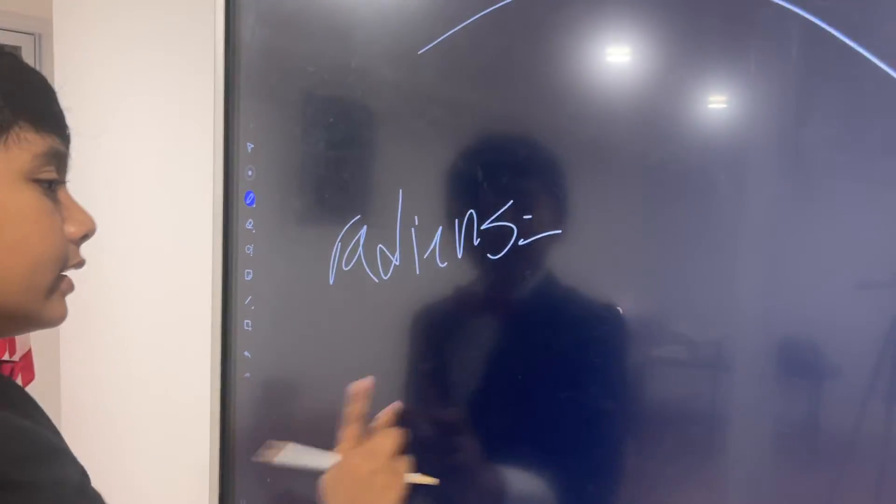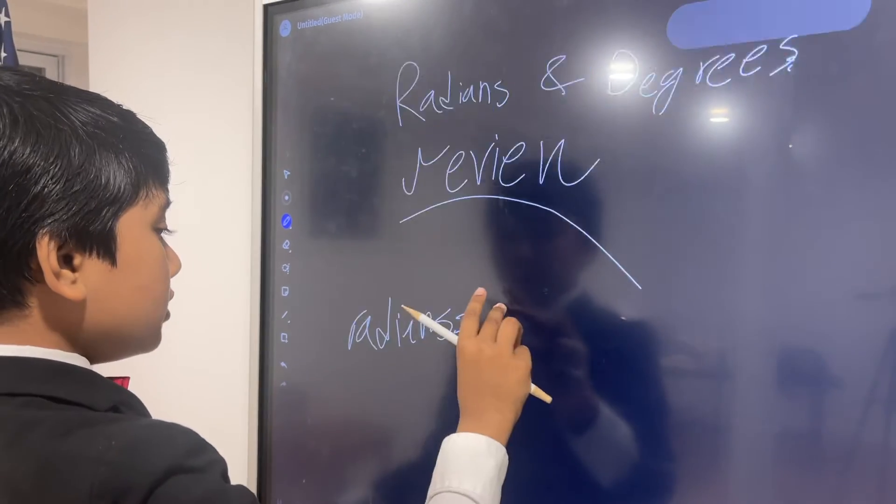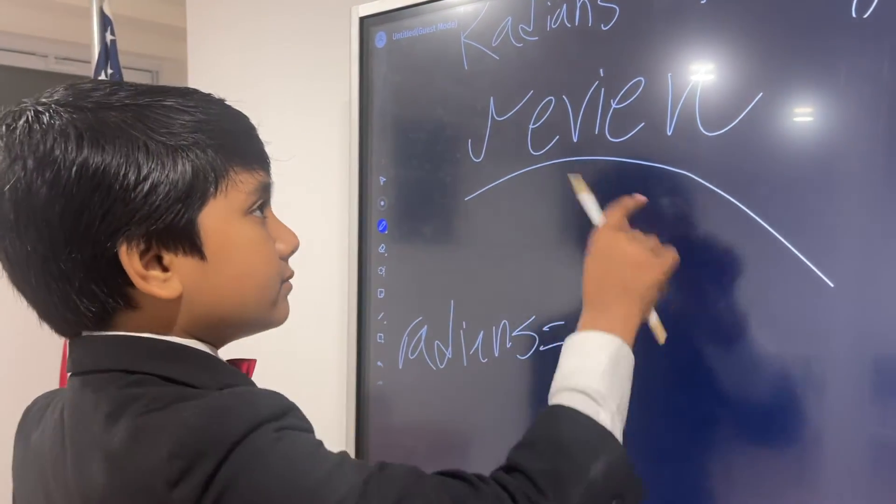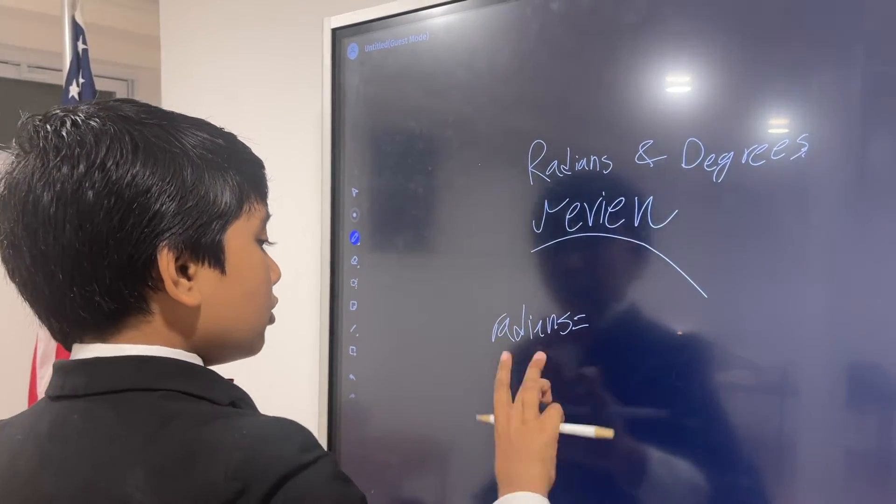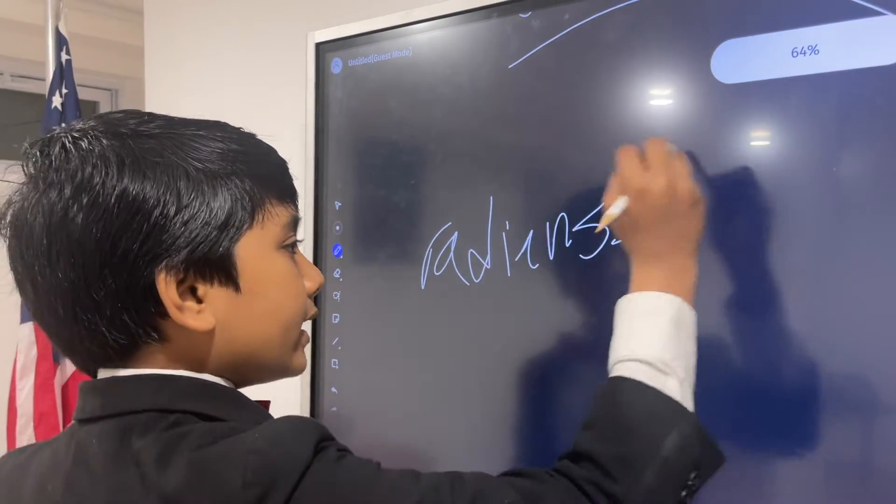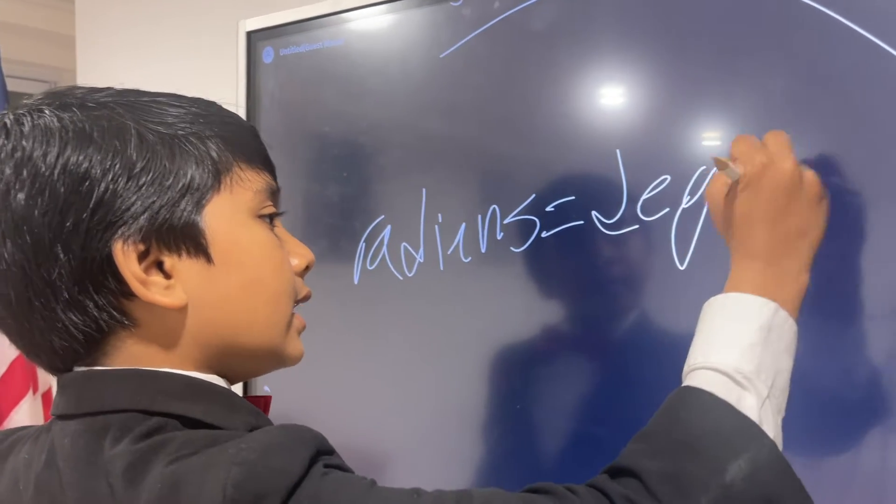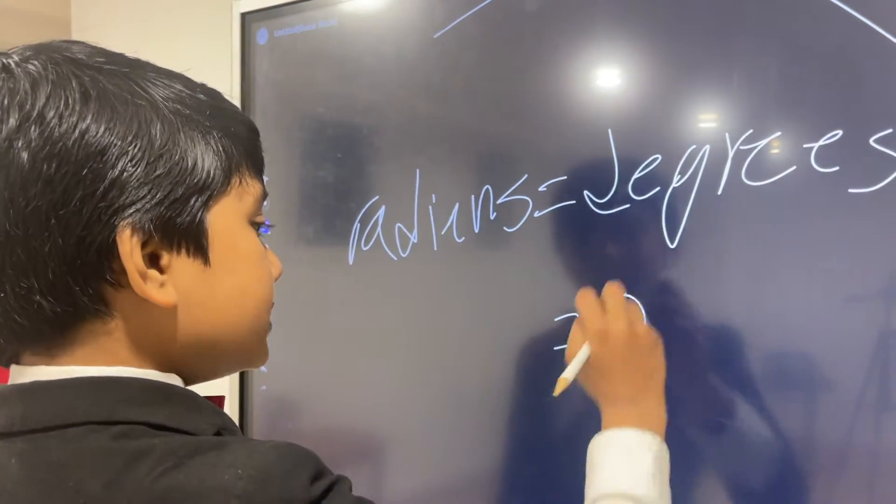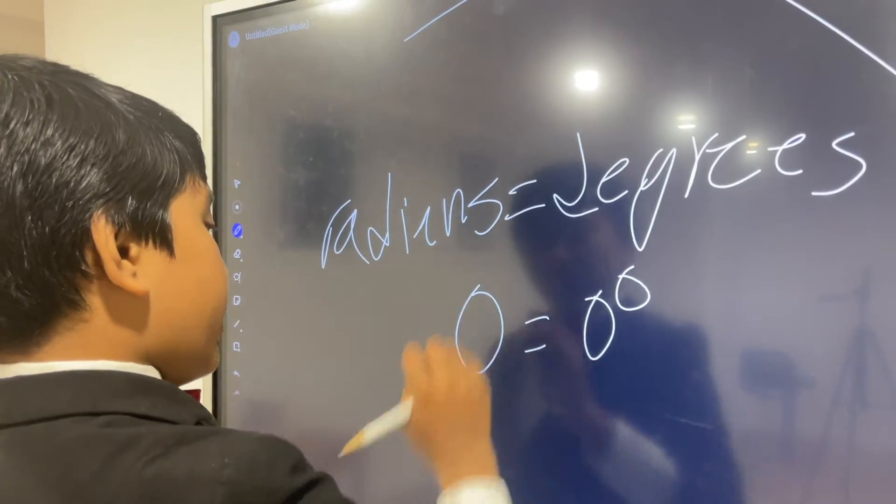Radians? Well, they are essentially a way of measuring degrees in a different way. For example, if we wanted an equivalence between radians and degrees, then if we had zero degrees here, radians would be zero.